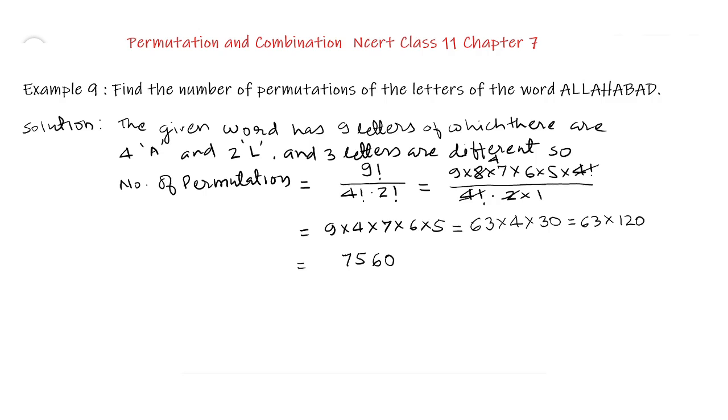Our number of permutations of given word Allahabad is 7560. 7560 different words can be made from the word Allahabad.